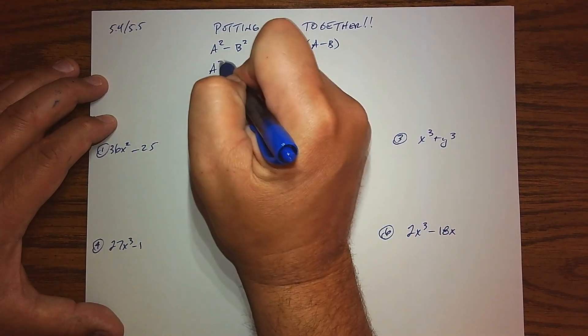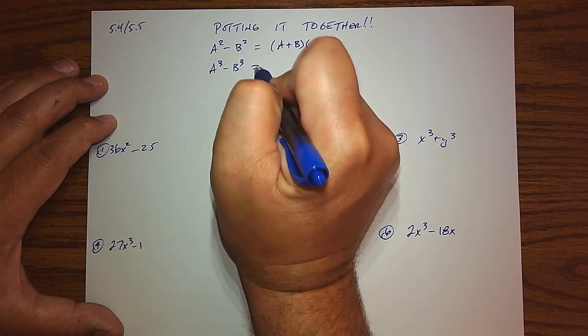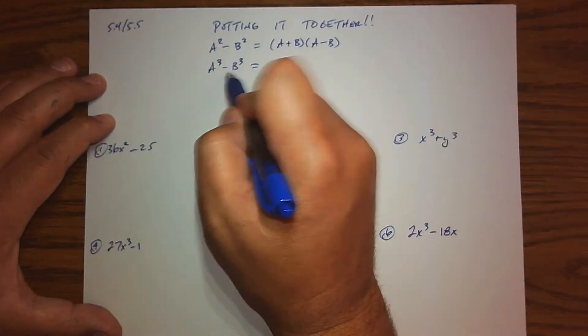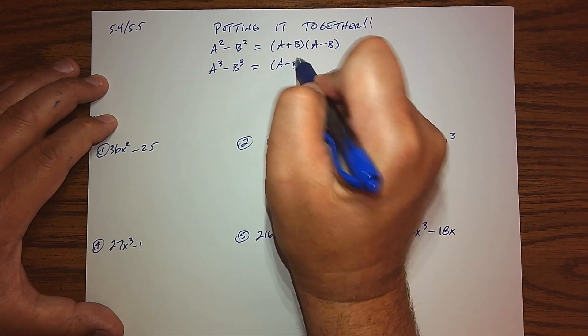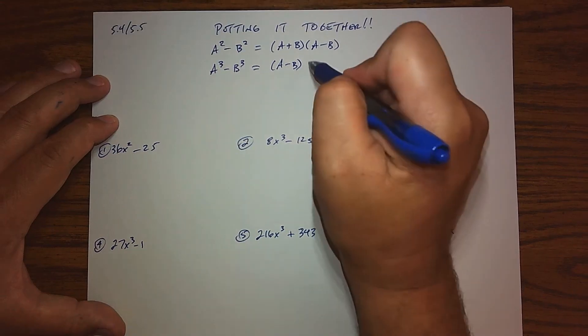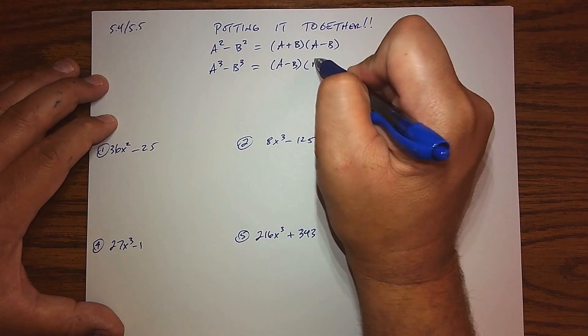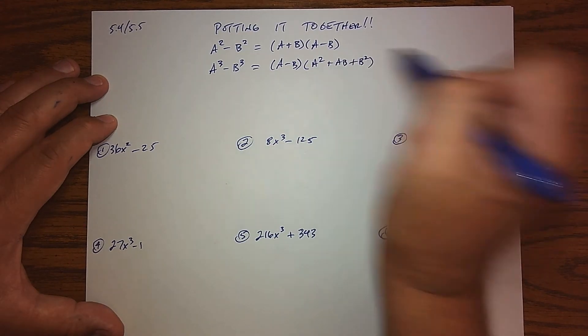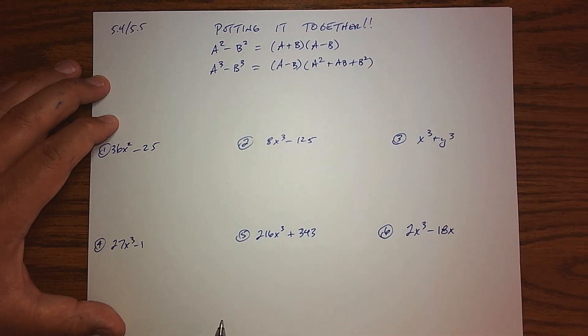The next famous pattern is a³ - b³, known as the difference of cubes. What we've learned is that these bases we put them in a binomial where we subtract them, and then we create a trinomial by taking the first term squared, the last term squared, and then we add their product in the middle.